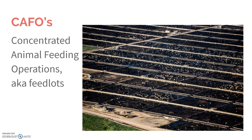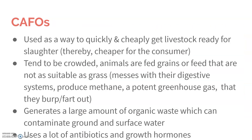Concentrated animal feeding operations have a lot of animals in a small area to maximize production. It is used as a way to quickly and cheaply get the livestock ready for slaughter.